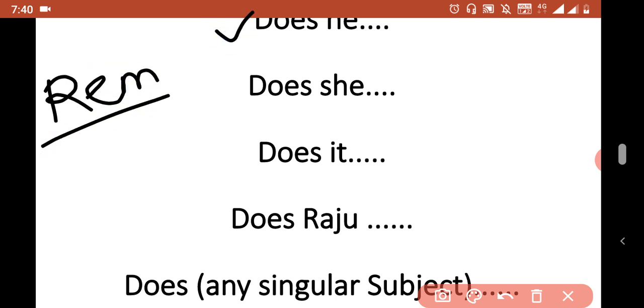Does he. He subject asil tarka use karay chahe, tumhi shurwa tila does use karay chahe. Does she, where there is subject she, you have to use does. Does it, does Raju, and then question mark or remaining sentence. Does, any singular subject.